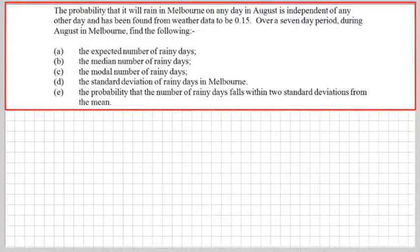Part A, the expected number of rainy days, no problem. Part B, the median number of rainy days, a problem. Part C, the modal number of rainy days, definitely a problem. Part D, the standard deviation of rainy days in Melbourne, no problem at all. And Part E, the probability that the number of rainy days falls within two standard deviations from the mean.